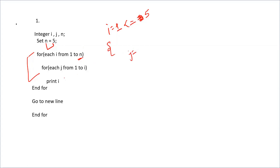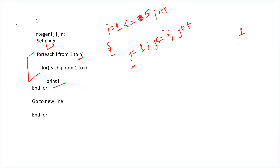Inside the outer loop, there's another loop where j is initialized to 1 and runs while j is less than or equal to i. We are simply printing the value of i. Initially i is 1, so the condition j less than equal to 1 is true — 1 will be printed. Then j becomes 2, which is not less than or equal to 1, so we exit the inner loop and move to the next line.